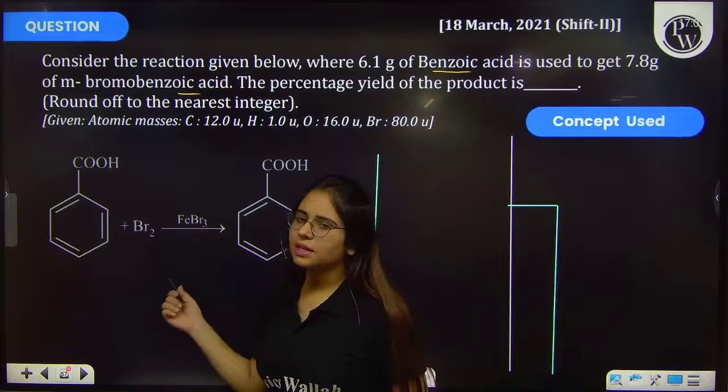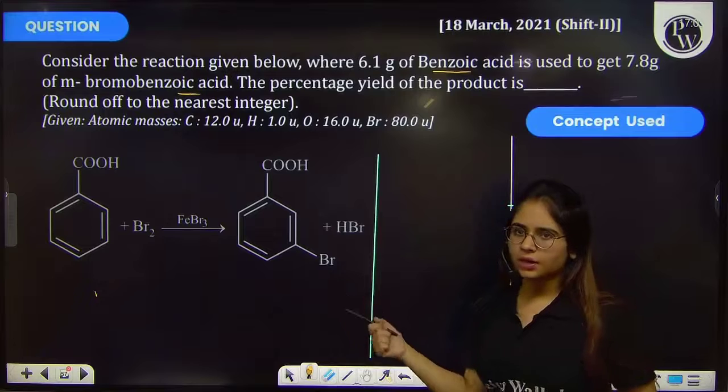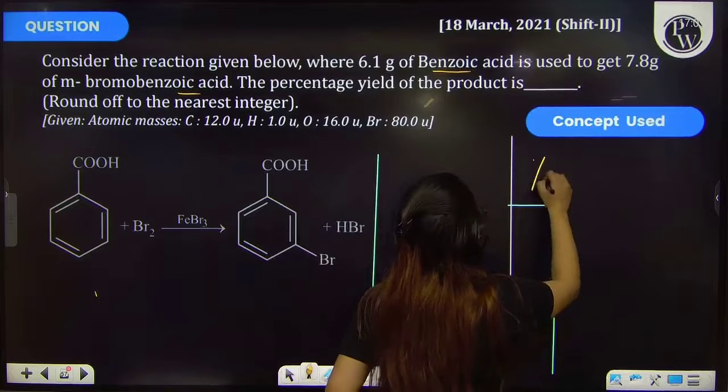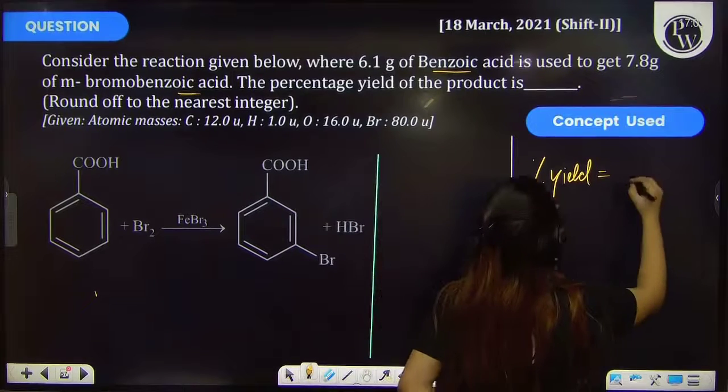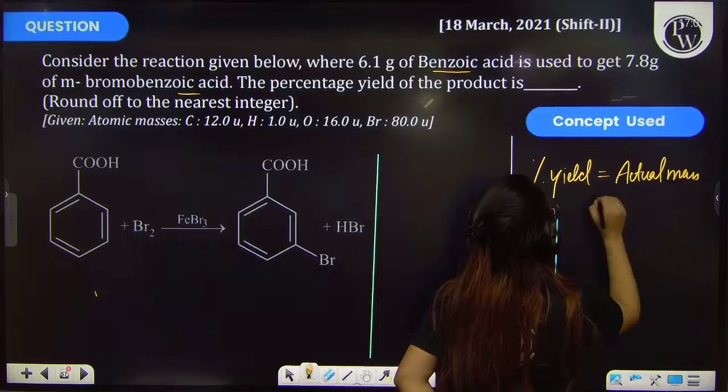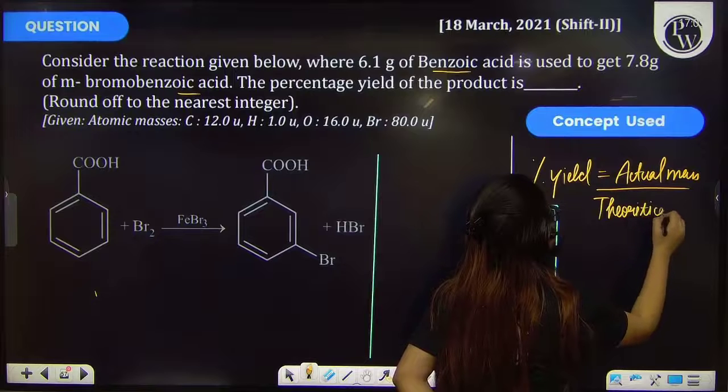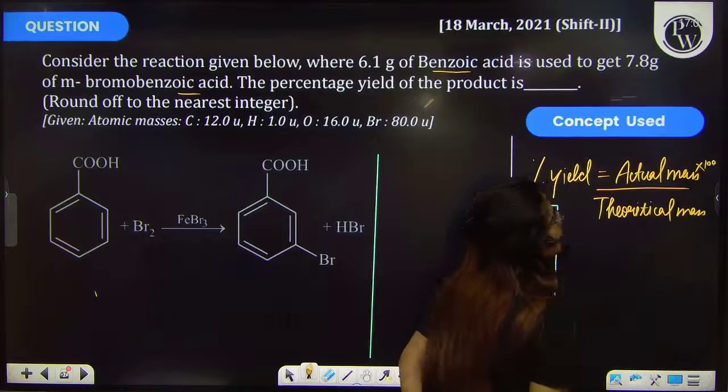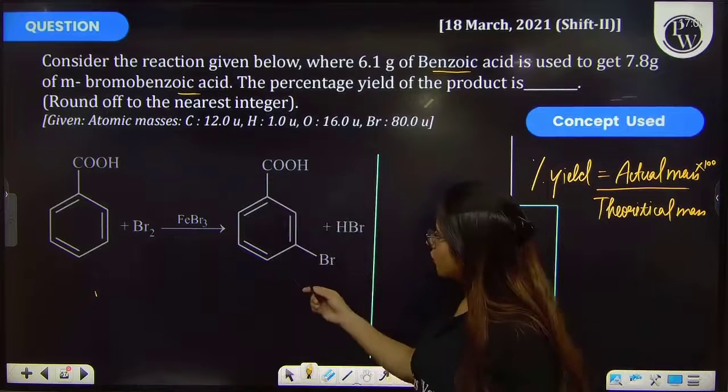In the question, the mass of the reactant and the main product is given, and you have to calculate the percentage yield. So the key concept here that we will be using is percentage yield, which is equal to the actual mass upon theoretical mass into 100. By using this formula, let's calculate the percentage yield of the product.